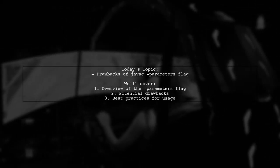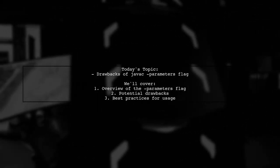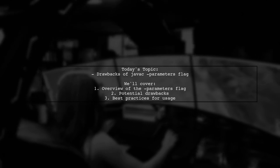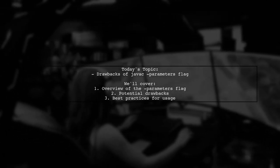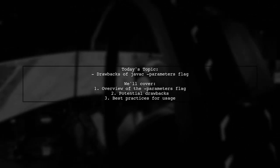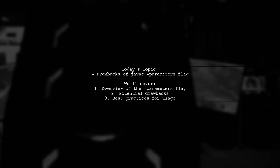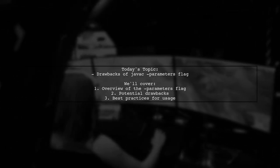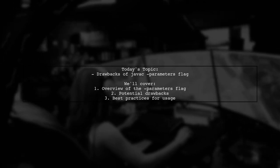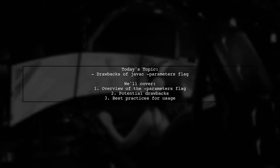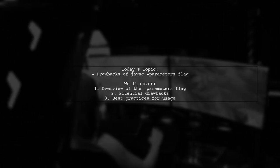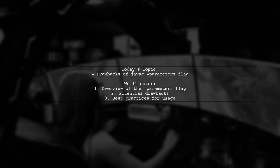Welcome to our Tech Insights video. Today, we're tackling an important question that many developers encounter. Our viewer wants to know about the drawbacks of using the Javac Parameters flag when compiling their applications. This flag is essential for frameworks that require parameter names at runtime, as it embeds those names into the JVM bytecode. But aside from the increased size of your JAR or WAR files, what other potential downsides should you be aware of? Let's explore this topic together.